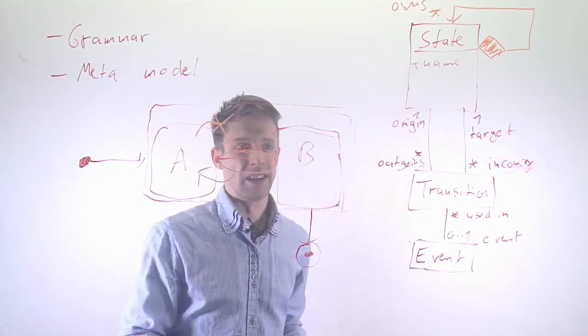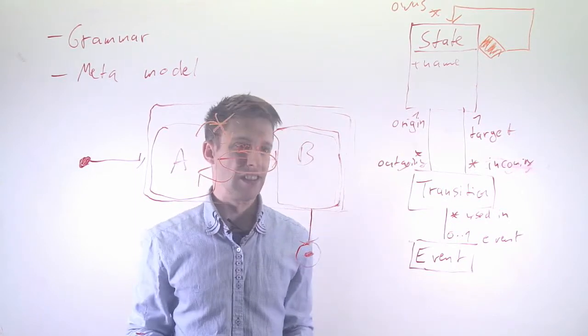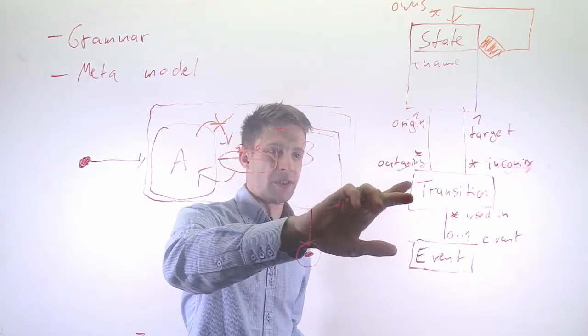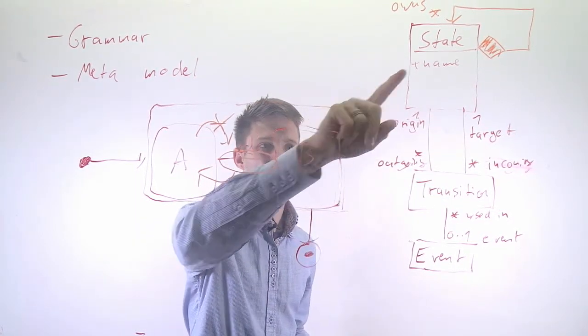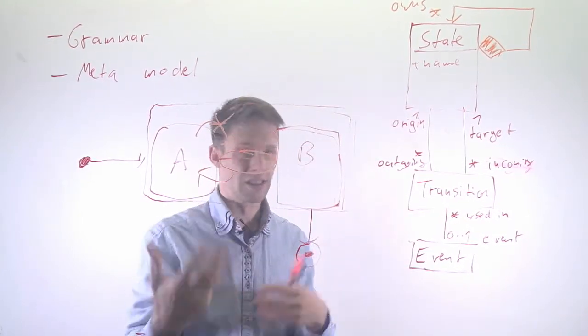So we could theoretically do that, and that's something we need to restrict, so we need to make sure that these things add up. So if a transition has an origin, then that origin also has to have this transition as an outgoing transition, and so on.